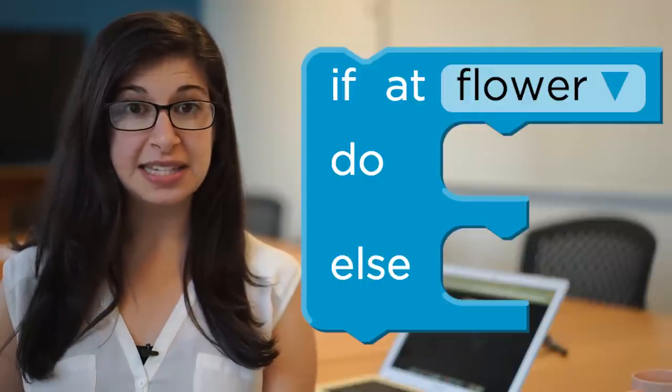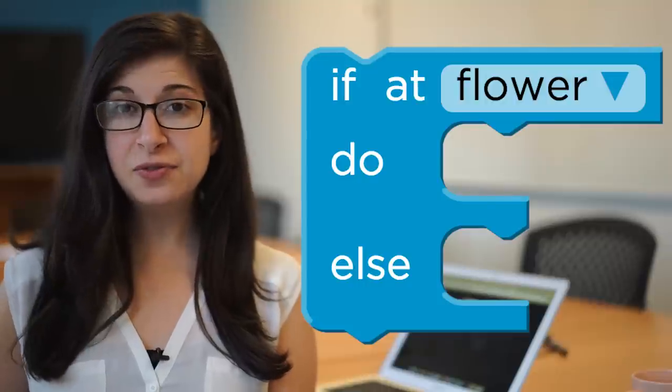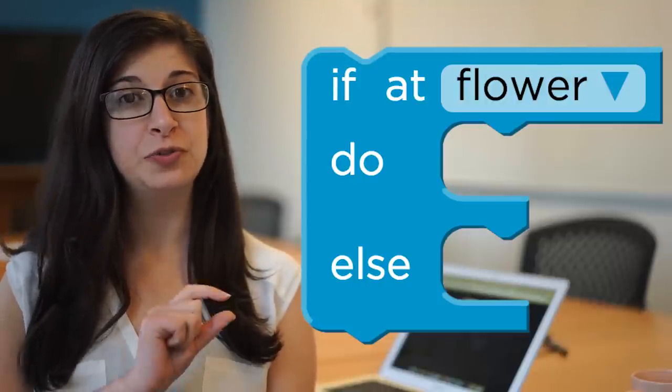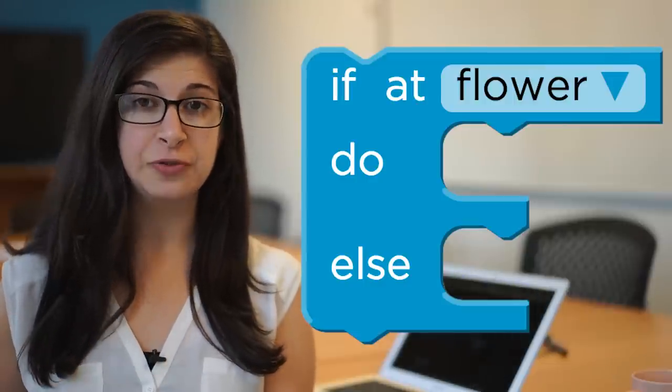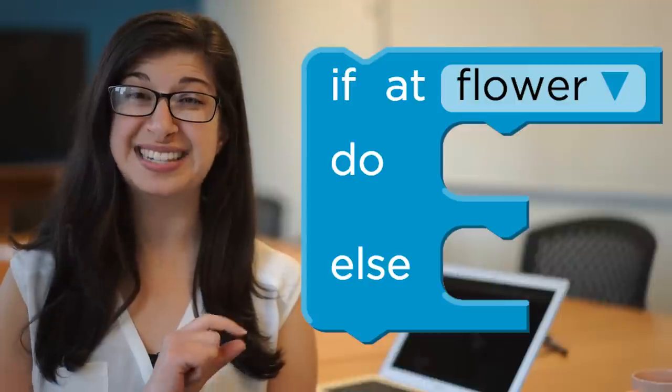The if-else block lets the bee make a decision between two sets of actions. If the bee is at a flower, the bee will do the set of actions you put in the first part where it says do. If the bee is not at a flower, the bee will do the set of actions you put in the slot where it says else.